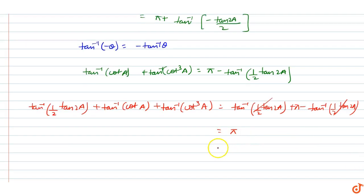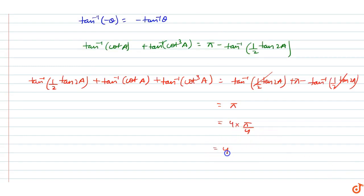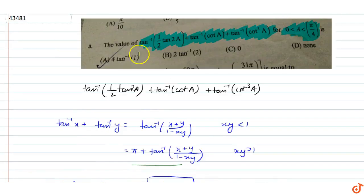Now pi can be written as 4 into pi by 4, and since tan inverse of 1 equals pi by 4, we can write this as 4 tan inverse of 1. So our final answer is 4 tan inverse of 1, that is option A.